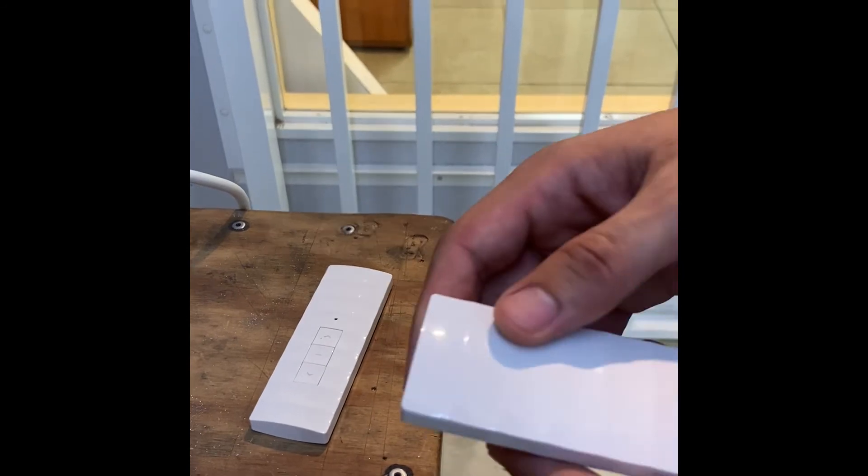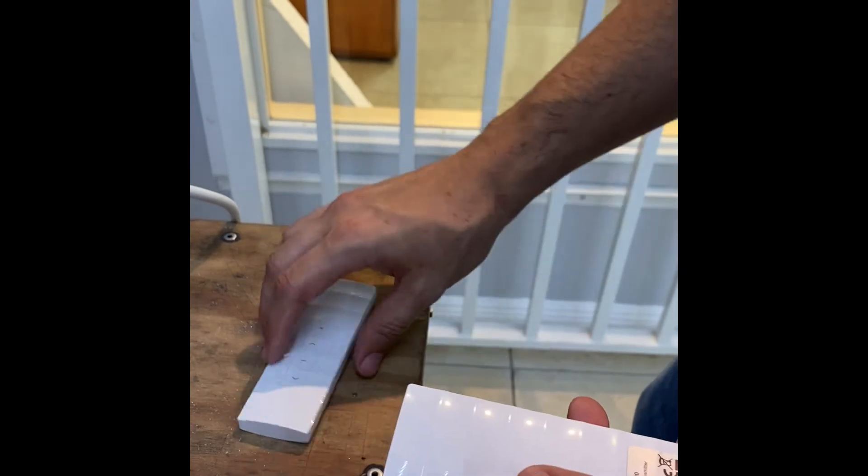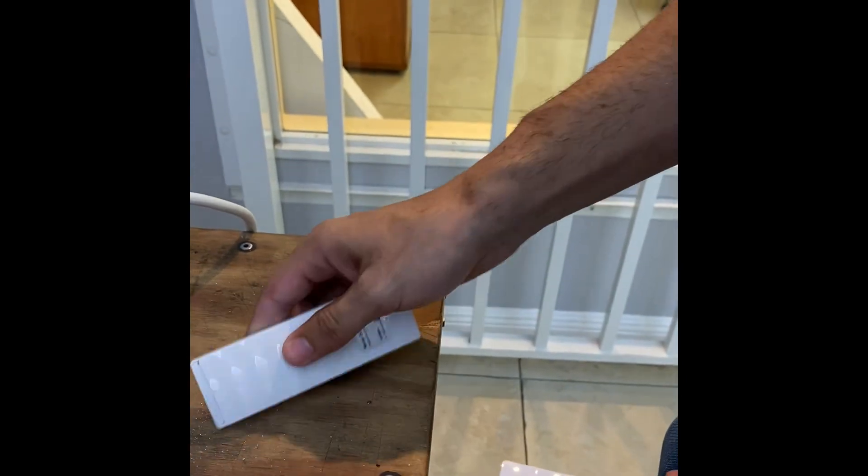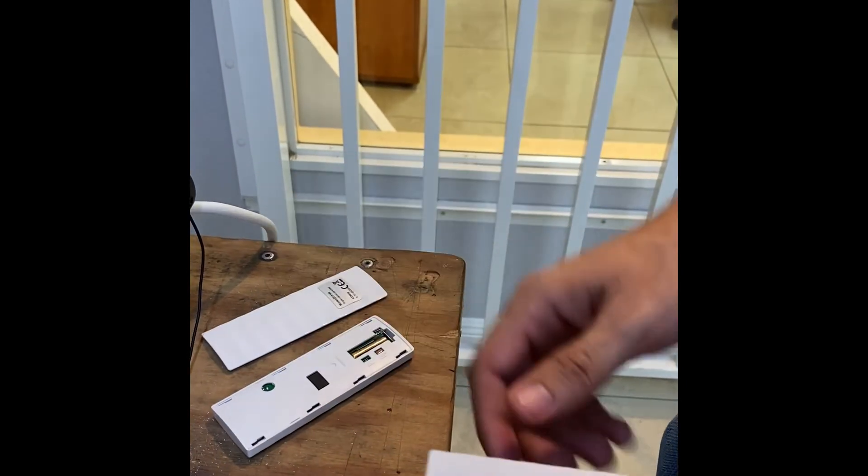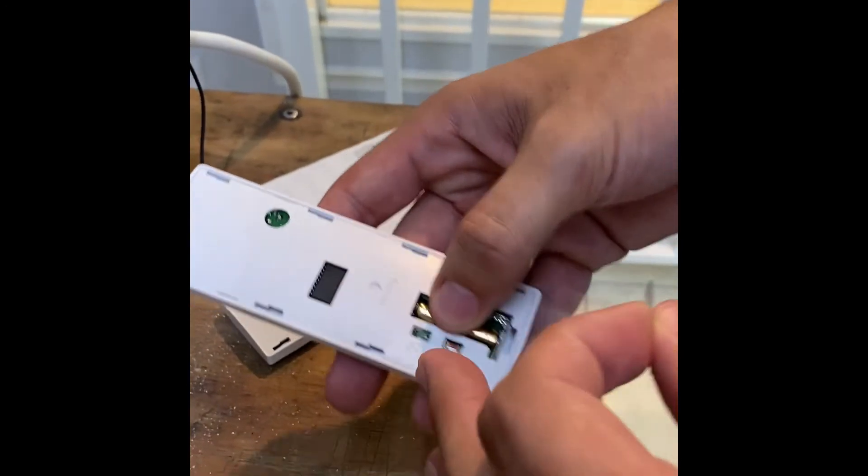In this video we'll cover how to create a backup remote. This is done by cloning the signal. The way that we do that, you have the original remote, you remove the back battery cover, and on the new remote you do the same and remove the film from the battery.